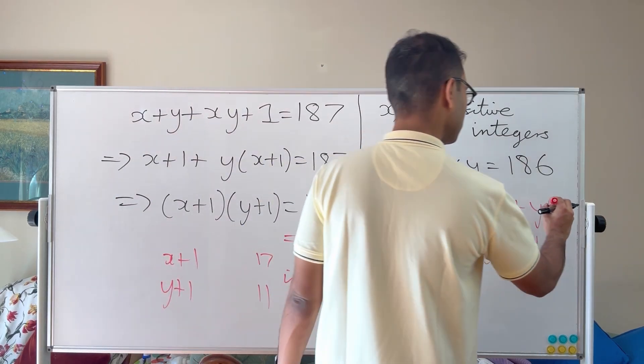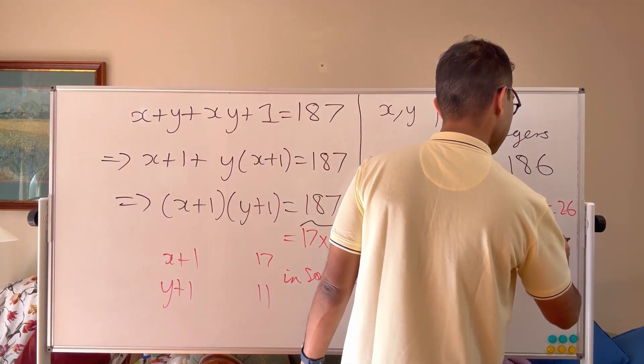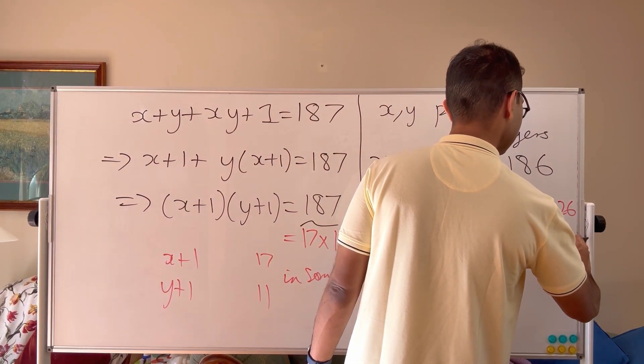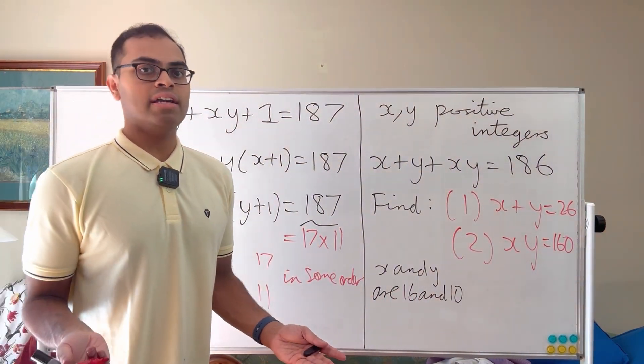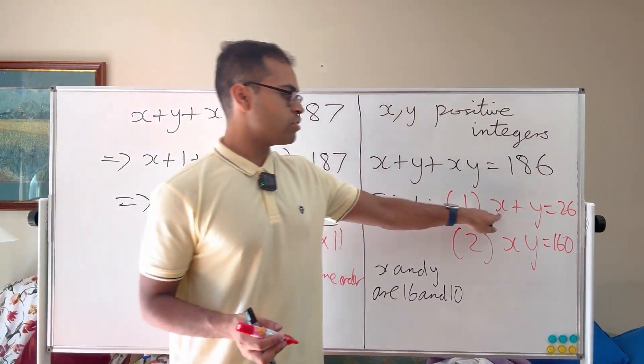So x plus y is going to equal 26 and x times y is going to equal 160. And that's so beautiful because you couldn't find x and y individually, but you could still find out those quantities.